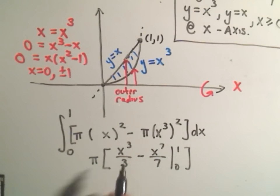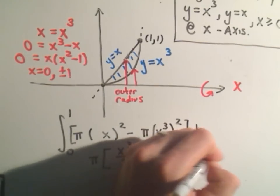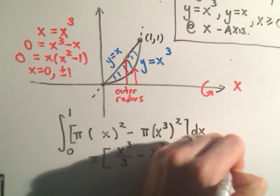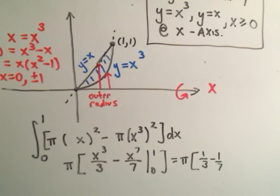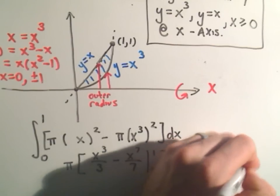Well all we have to do now is plug our limits of integration in. If you plug one in you'll get one third minus one seventh. When we plug the lower limits of integration in, we'll simply be subtracting away a bunch of zeros.